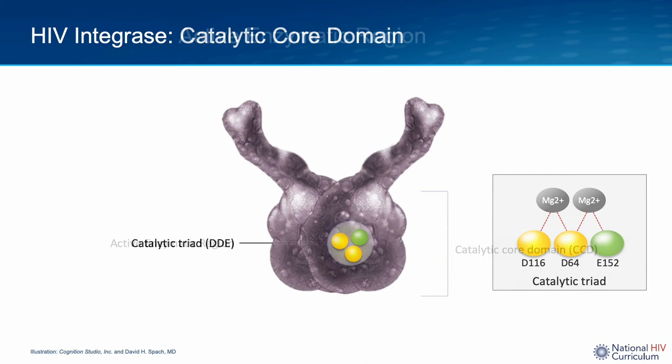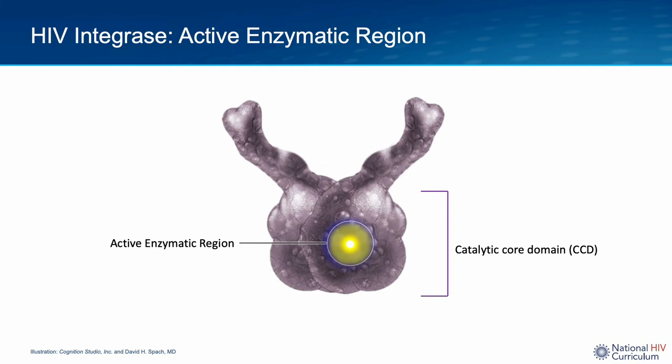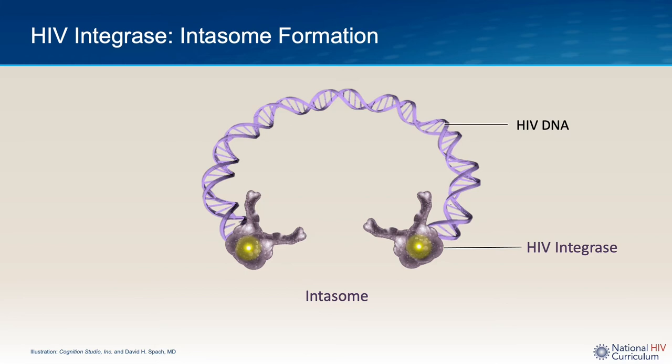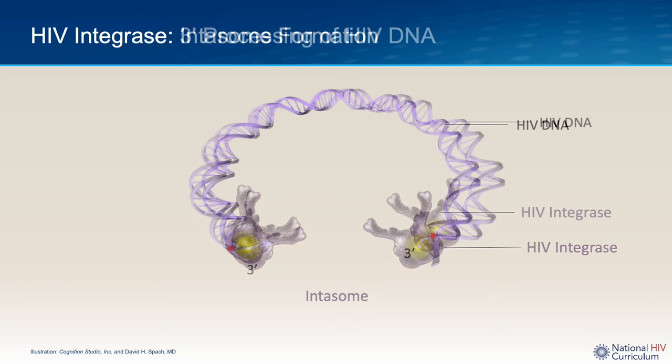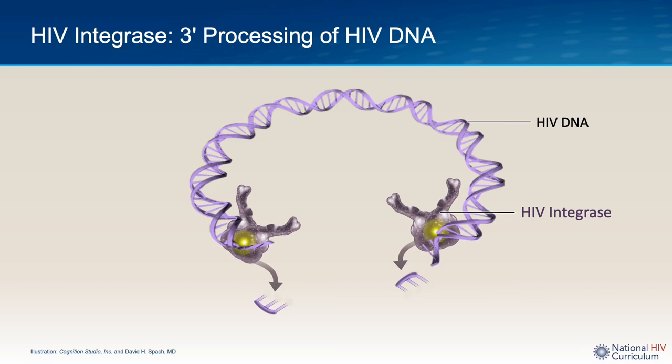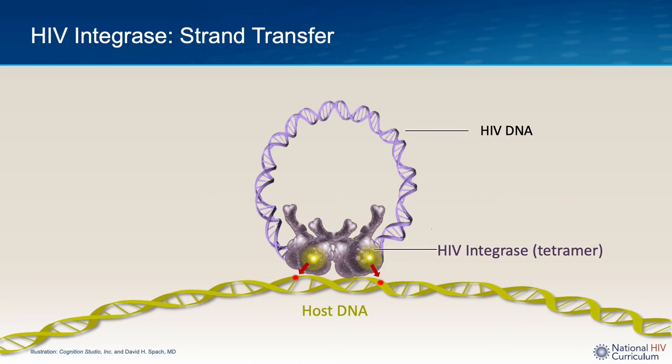During viral replication, HIV integrase is bound to HIV DNA, and this complex is referred to as the intasome. In the intasome complex, the HIV integrase enzyme provides two key functions. The first is 3' processing, which involves the integrase enzyme cleaving several nucleotides on the 3' end of the HIV DNA. The second main function of HIV integrase is strand transfer, the process whereby integrase catalyzes the insertion and transfer of HIV DNA into the host DNA.